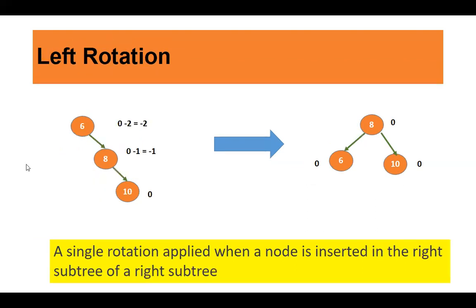The next rotation is left rotation. Here 6 has a right-to-right insertion: to 6's right, 8 is inserted, and to 8's right, 10 is inserted. This has made node 6 imbalanced with a balance factor of minus two — the right side has height two and the left side has no nodes, so zero minus two gives minus two. Node 8 has balance factor minus one and node 10 is balanced with balance factor zero. Since the imbalance is caused by right-to-right insertion, you carry out left rotation. When rotated left, 8 becomes the root, 6 becomes the left child, and 10 becomes the right child — the binary search tree property is maintained.